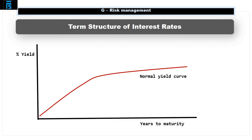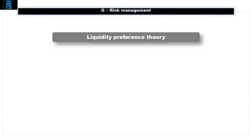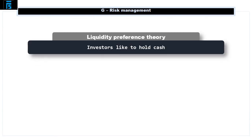The precise shape of the curve is governed by three separate theories. 1. Liquidity preference theory states that investors like to hold cash and accordingly the longer the period they are asked to give that up, the greater the compensation they require. This explains why the curve is upwards.